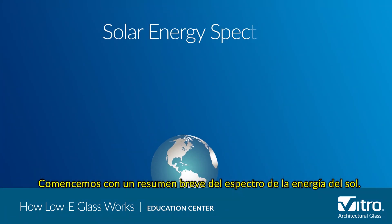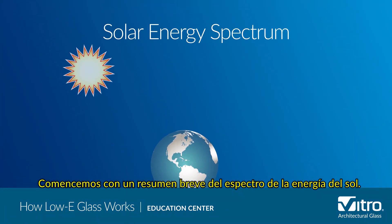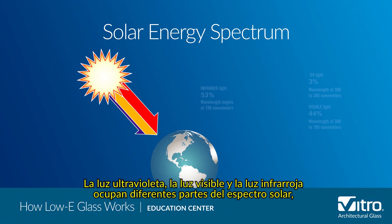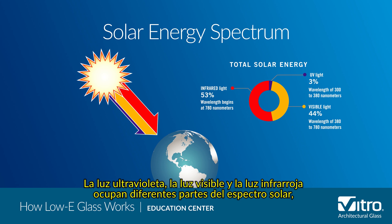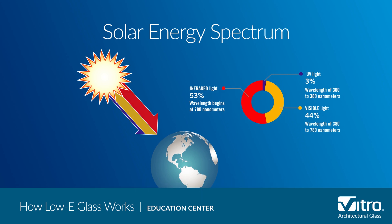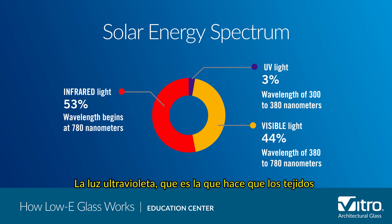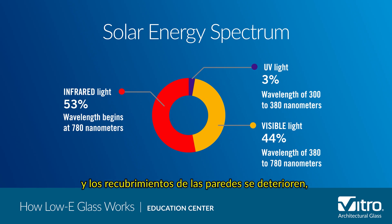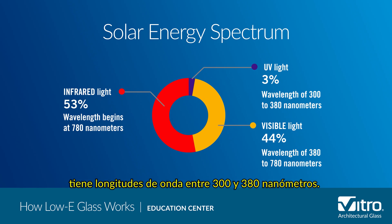Let's begin with a brief overview of the sun's energy spectrum. Ultraviolet light, visible light, and infrared light all occupy different parts of the solar spectrum, and the differences between the three are determined by their wavelengths. Ultraviolet light, which is what causes fabrics and wall coverings to fade, has wavelengths between 300 to 380 nanometers.